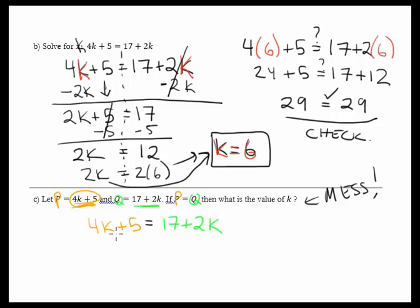That's the first step of this equation. That's the first step in solving this. It looks like a mess. But really, they're just saying, everywhere you see p, put in 4k plus 5. Everywhere you see q, put in 17 plus 2k. Whatever these things equal to, just substitute them. This is just an example of substitution.